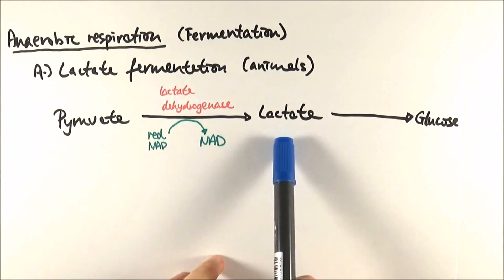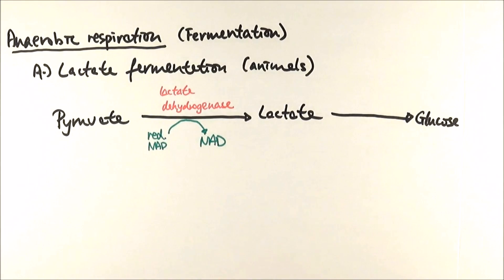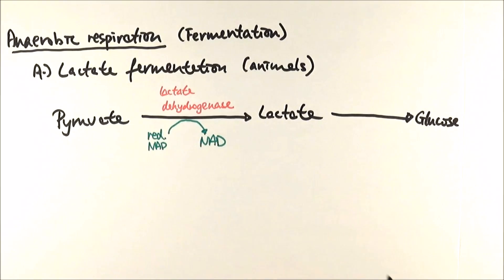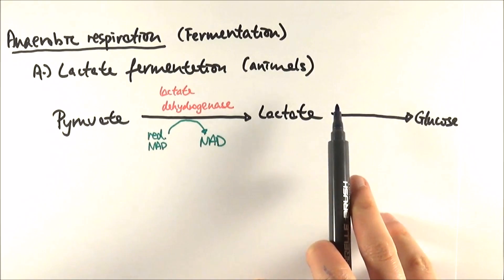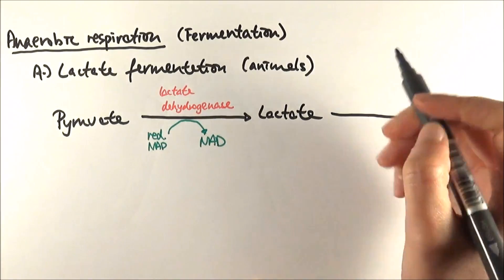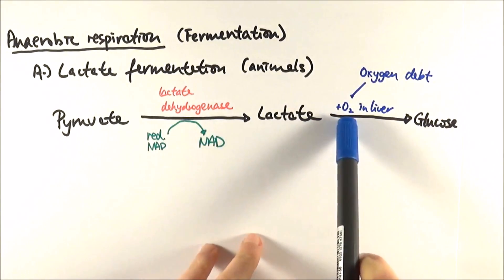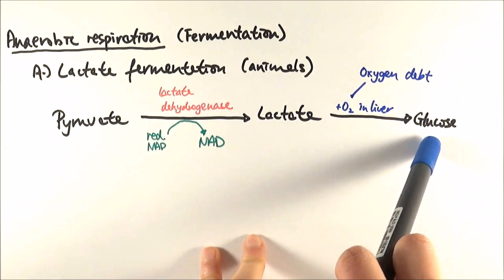Now, as you will know from before, lactic acid is not ideal to be staying inside our cells because it will start denaturing our enzymes and proteins, giving us muscle fatigue. So we have something called oxygen debt, which is the amount of oxygen needed to break lactic acid down. And what happens is, lactate enters the bloodstream and is transported to the liver.